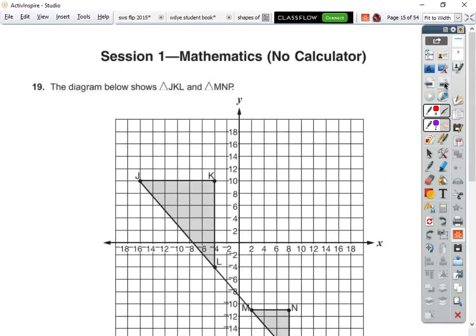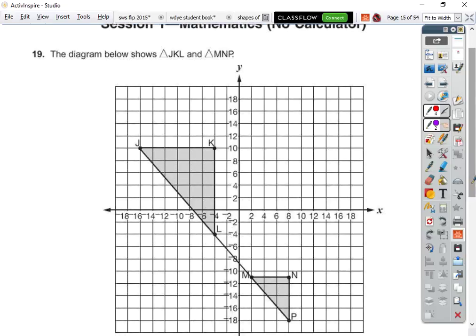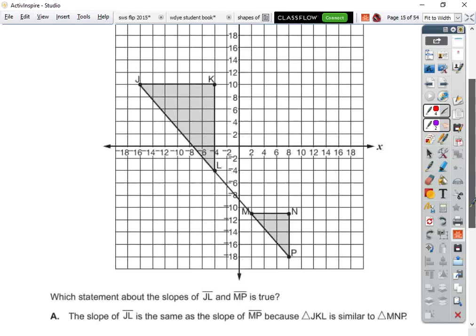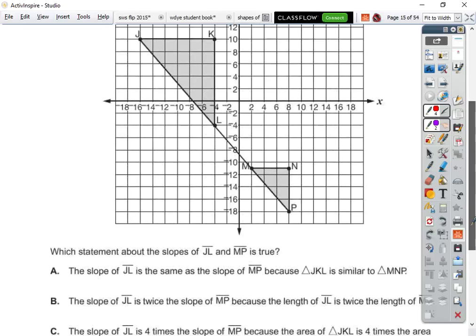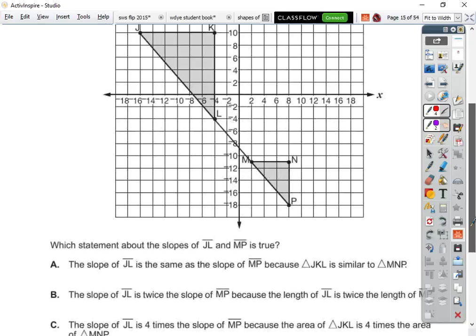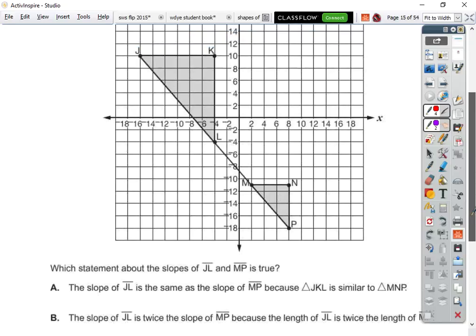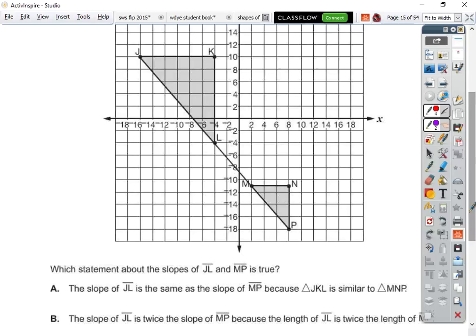The reason why you're getting so many negative exponent problems is because scientific notation is becoming a bigger deal, as math and science are getting emphasized. The diagram shows triangle JKL, and triangle LMNP. Which statement is true about the slope of JL and MP? Well, the slope of, it's the same line, folks, so the slope should be the same. The slope is the same because it's similar. Well, I'm not sure if they're similar or not. Let's find out.